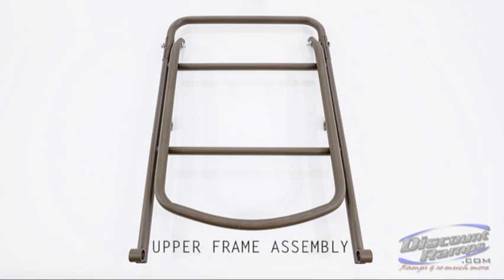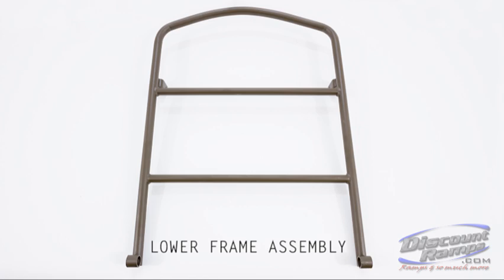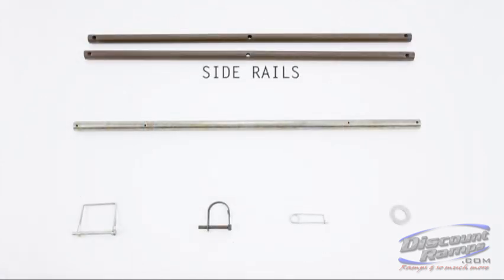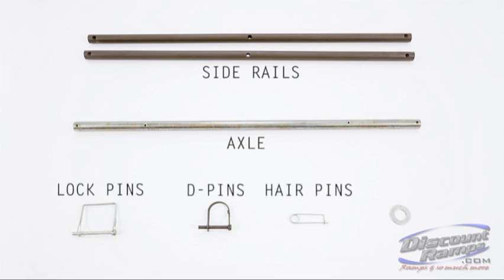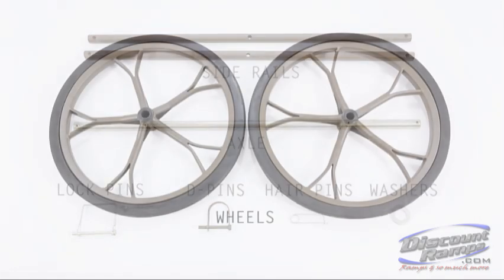Parts needed for assembly include upper frame assembly, lower frame assembly, side rails, axle lock pins, D-pins, hair pins, washers, and wheels.